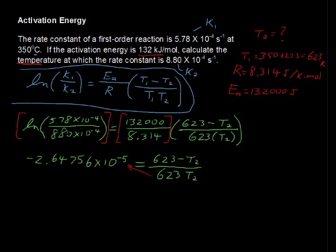And on the left-hand side, then we get negative 0.01649 times T sub 2 still equals 623 minus T sub 2.